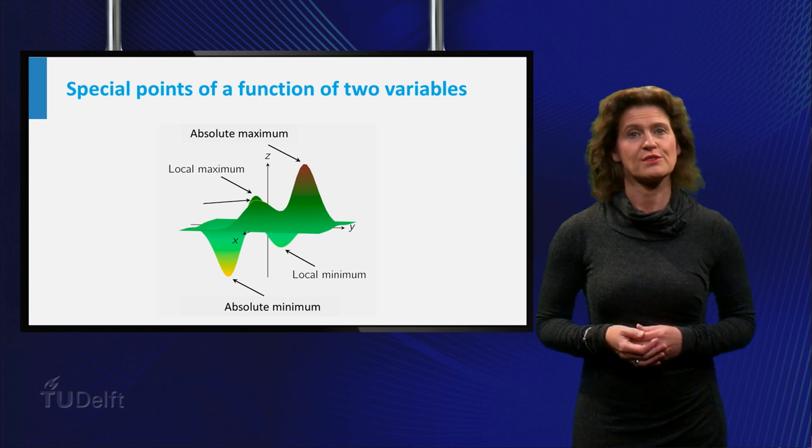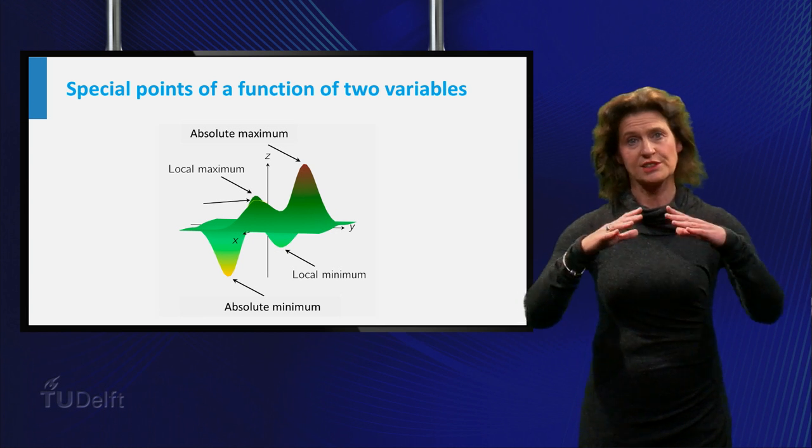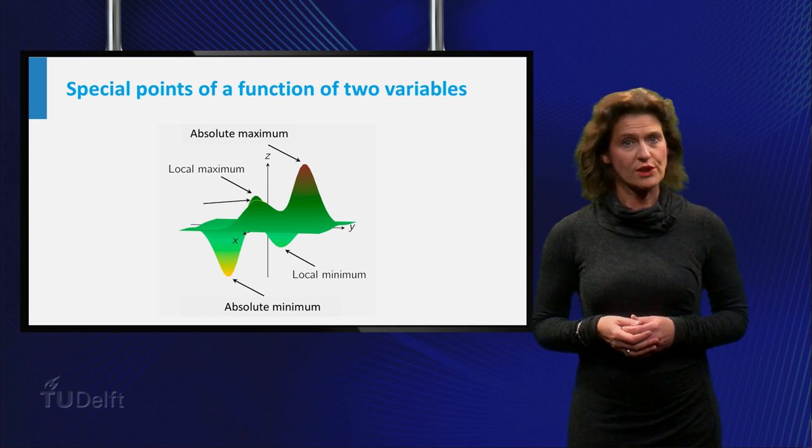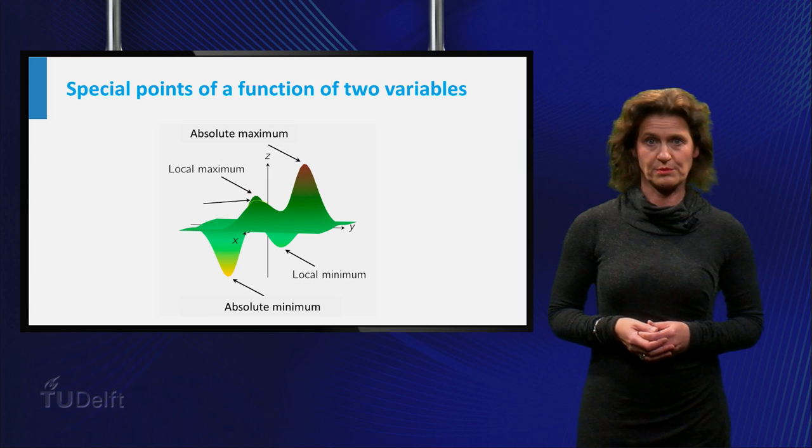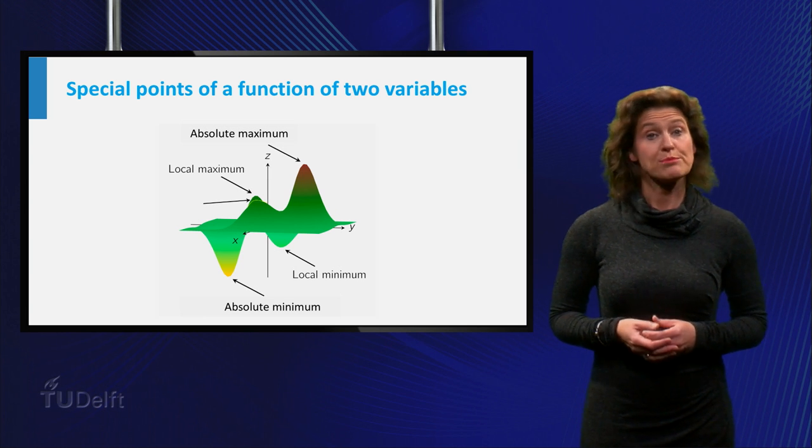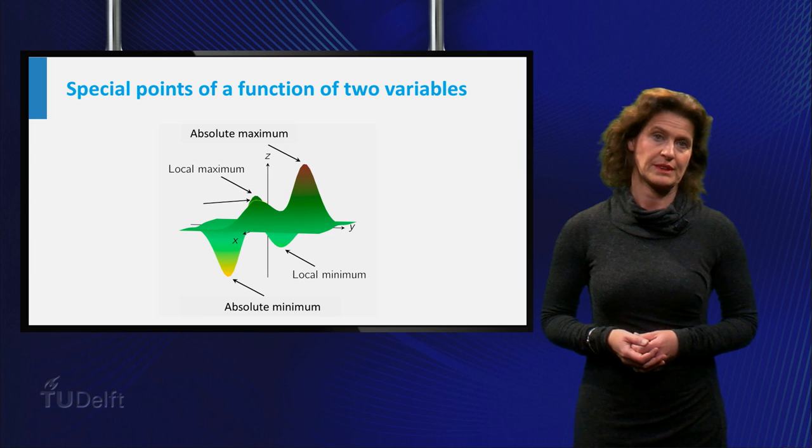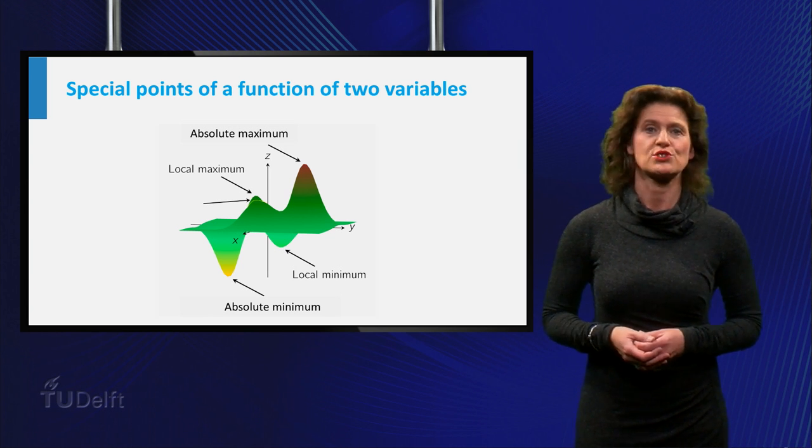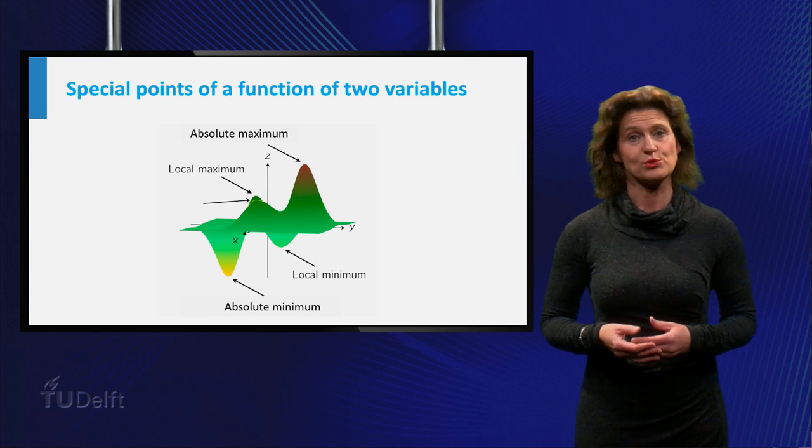In those points the value of the function f is larger than nearby values of f. These are the points where the function is said to have a local maximum. The larger of these three is called the absolute maximum. Likewise, there are two local minima, of which the smaller is called the absolute minimum.